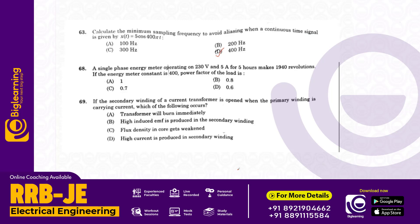A single phase energy meter operating on 230 volts and 5 amperes for 5 hours makes 940 revolutions. If the energy meter constant is 400, the power factor of the load will be 0.8. Answer B.